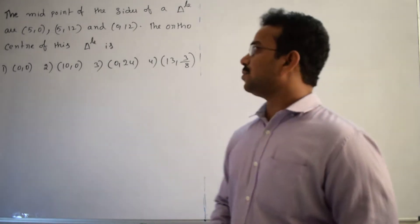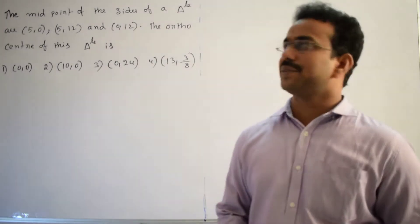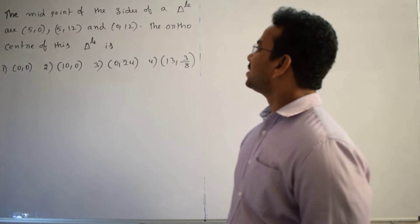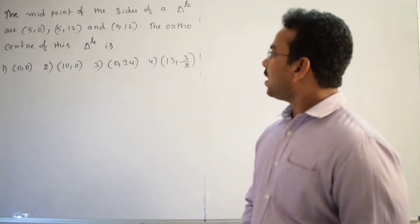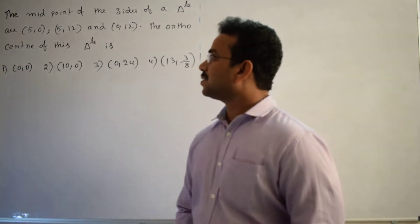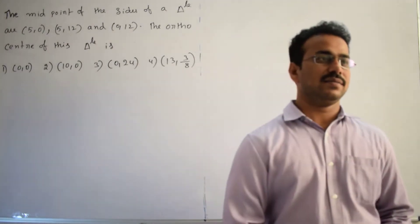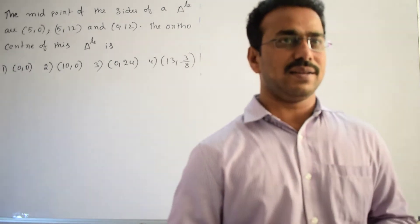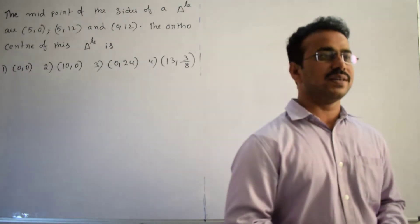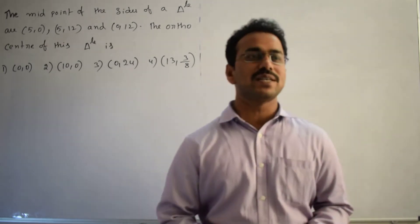Hi, let's discuss the solution of the given question. What is the given question? The midpoint of the sides of a triangle are (5,0), (5,12) and (0,12), then find the orthocenter of the triangle. Here our task is to find the orthocenter of the triangle. But what is the information they provide? They provide the midpoints of the triangle.